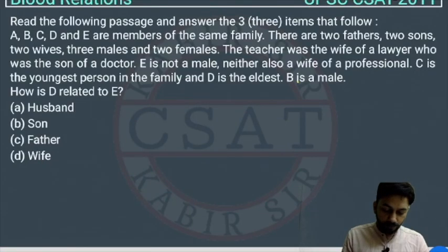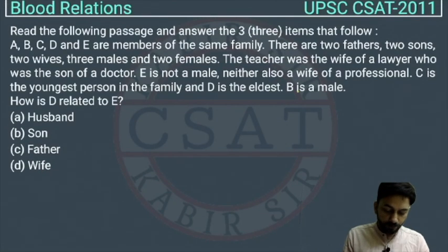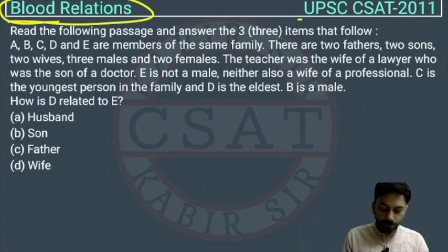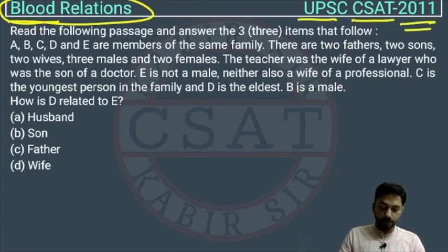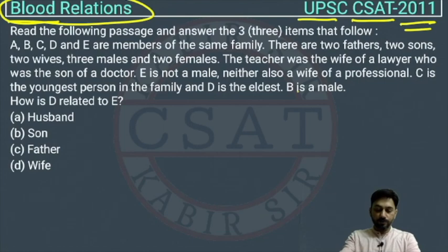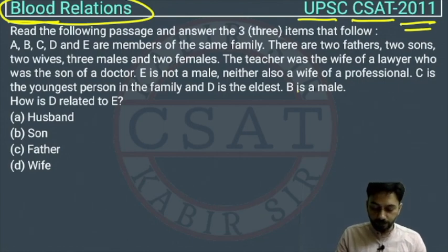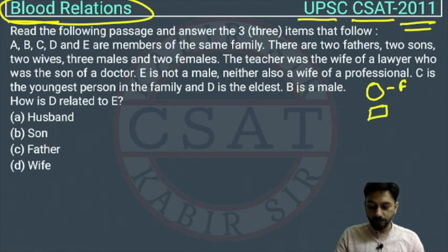This is a question of reasoning from the chapter Blood Relation, as asked by UPSC in their CSED paper of 2011. In blood relation questions, as I've discussed many times, we represent females by a circle and males by a rectangle.